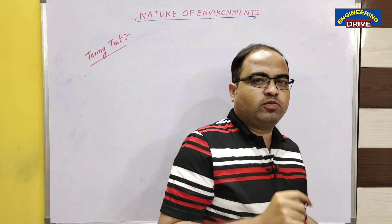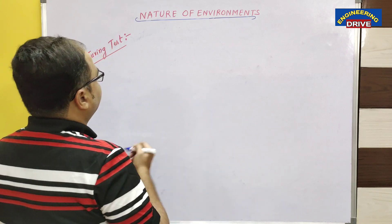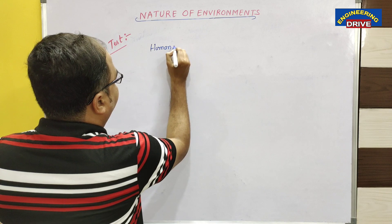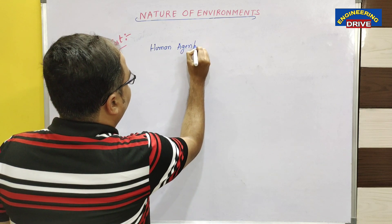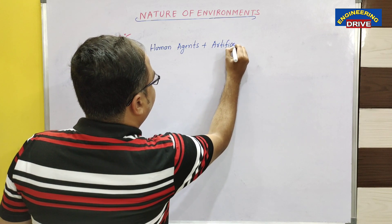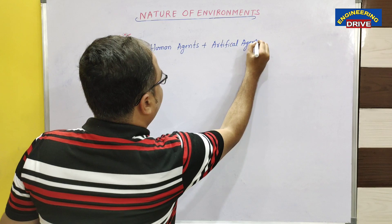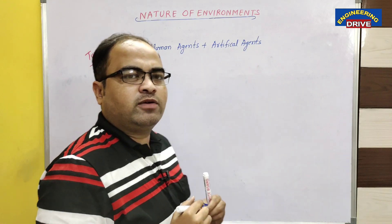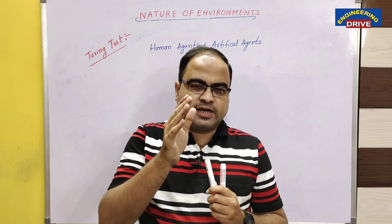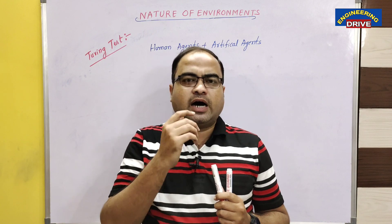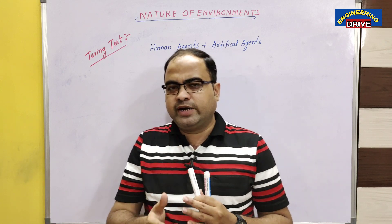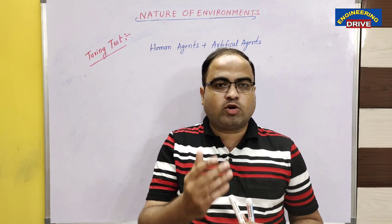So how can we do that? In this Turing test, we are going to combine human agents plus artificial agents. Ultimately, at the end of this Turing test, we need to find out who is intelligent between them — whether the human agent is intelligent or the artificial agent is intelligent. This Turing test is used to find out the intelligent behavior of the system.